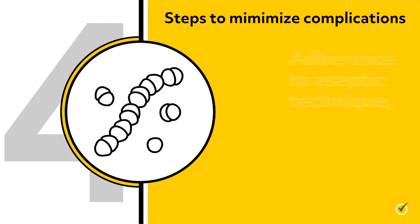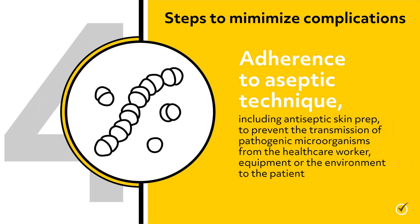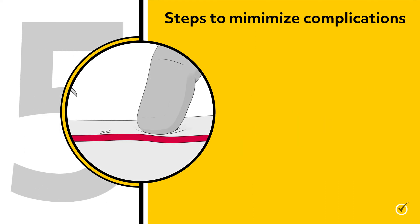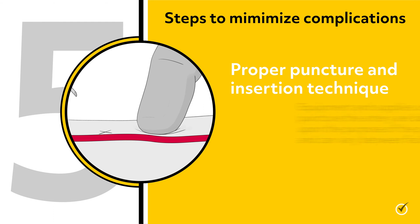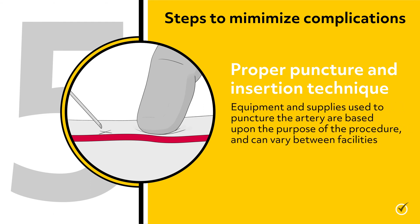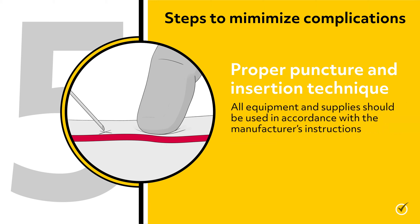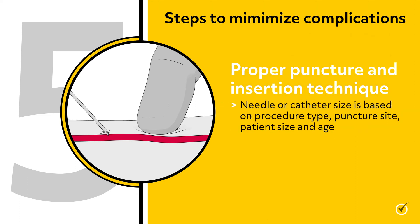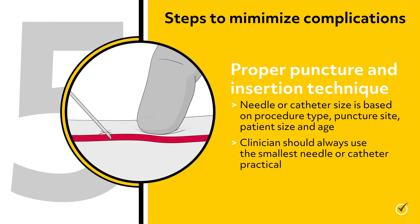Number four: adherence to aseptic technique, including antiseptic skin prep to prevent the transmission of pathogenic microorganisms from the healthcare worker, equipment, or the environment to the patient. Number five: proper puncture insertion technique. Equipment and supplies used to puncture the artery are based upon the purpose of the procedure and can vary between facilities. All equipment and supplies should be used in accordance with the manufacturer's instructions. Needle or catheter size is based on procedure type, puncture site, patient size, and age. However, the clinician should always use the smallest needle or catheter practical.